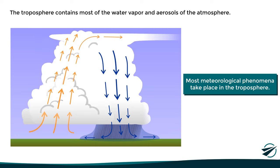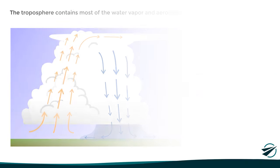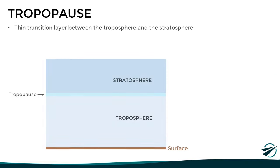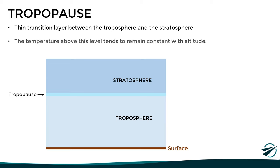Having already seen the troposphere, let's move on to the first transition layer, which is the tropopause. This is a thin layer that marks the boundary between the troposphere and the stratosphere. Its main characteristic is that the temperature lapse rate changes abruptly, and it now tends to remain constant with altitude.